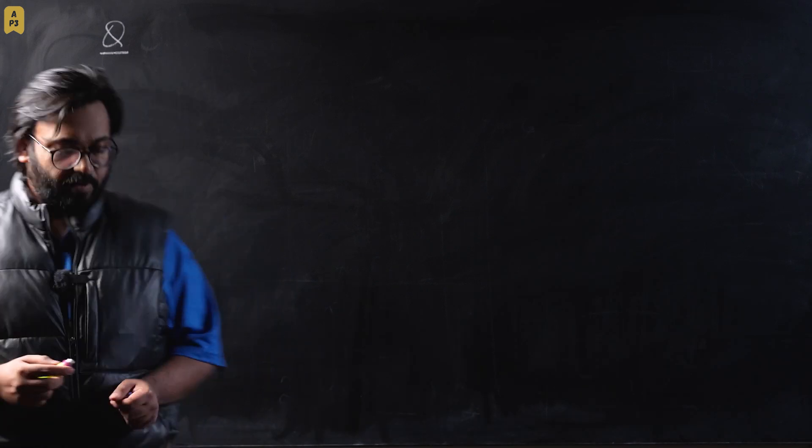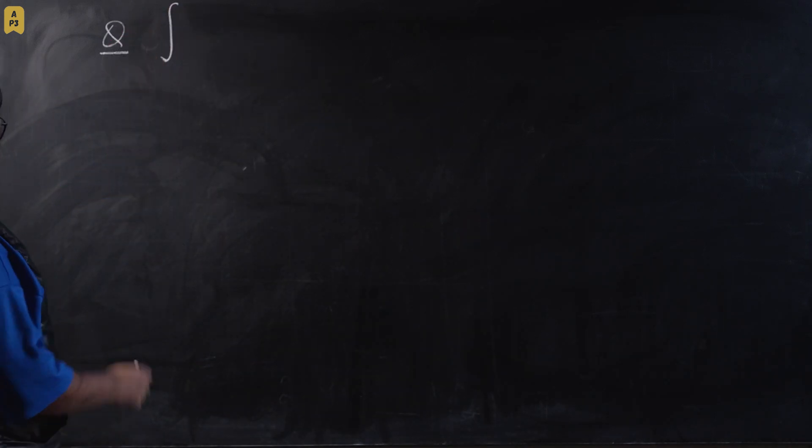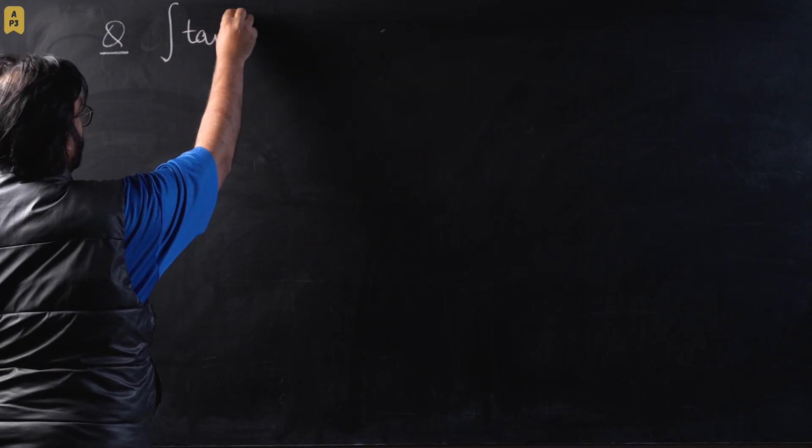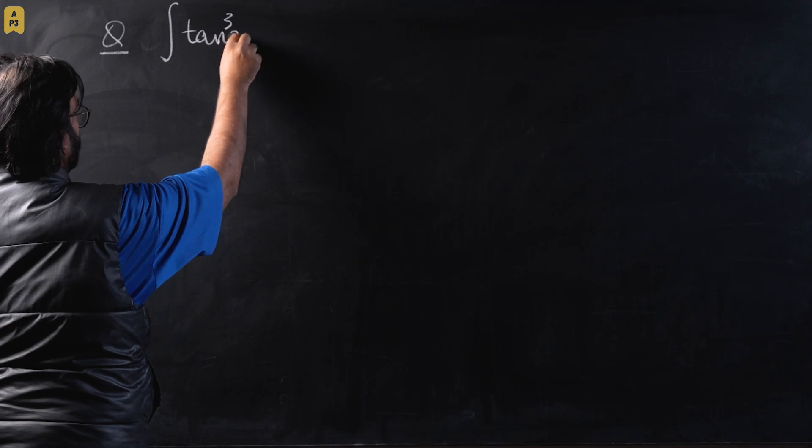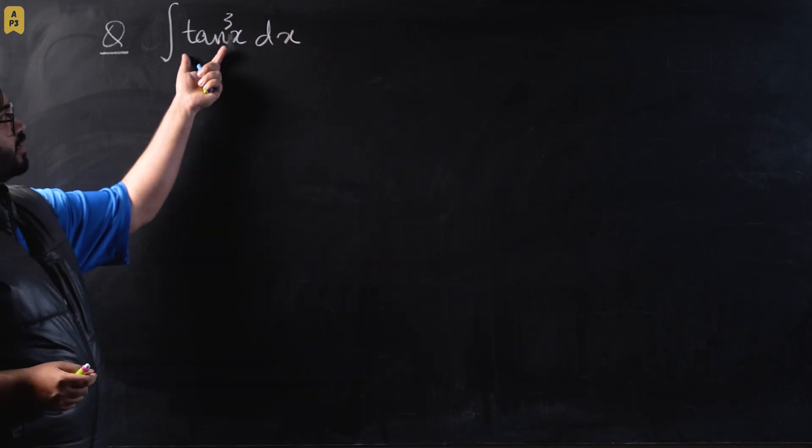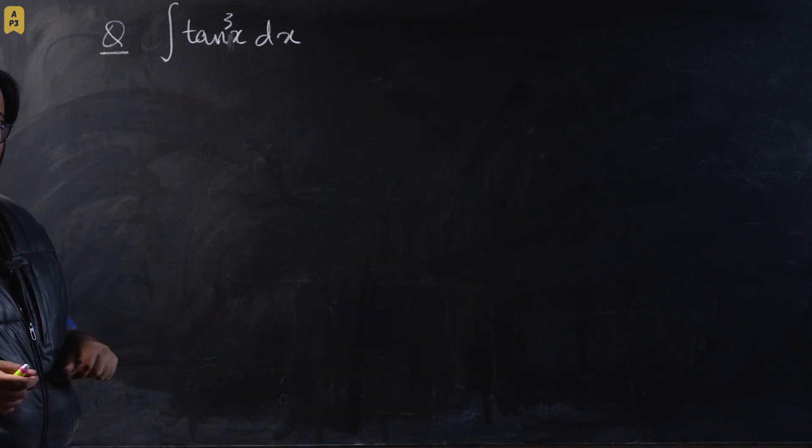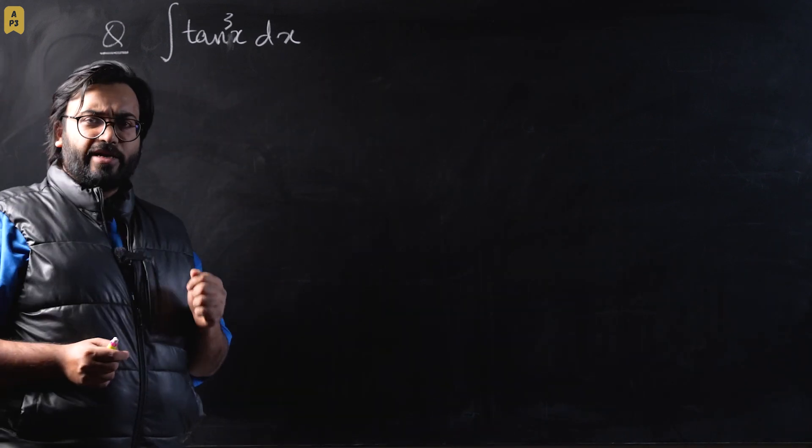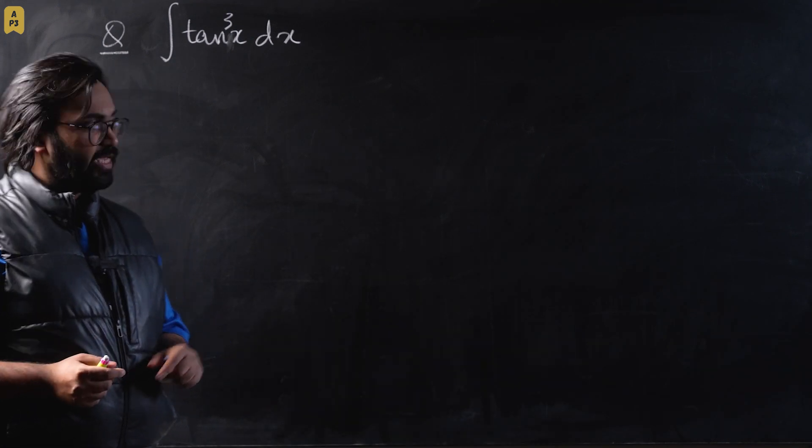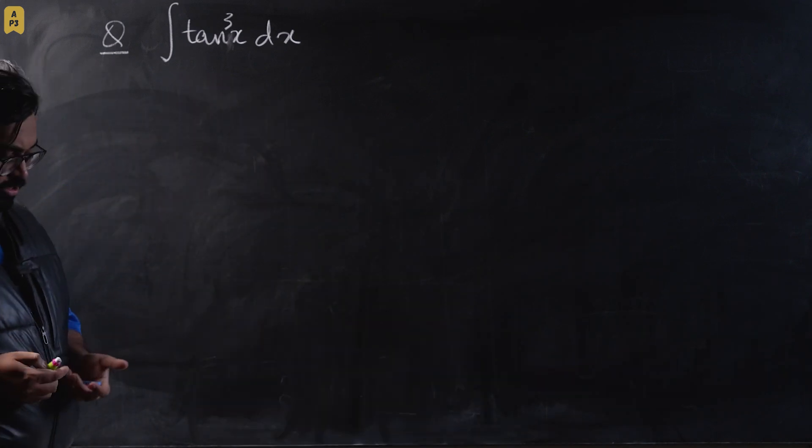So let's see what the problem is. The problem is integrating a trigonometric function: tan cubed of x. We have to integrate this function. First of all, I would want you to pause this and try to do this intuitively. If you're unable to do this intuitively, then you can come back and have a look at the solution.